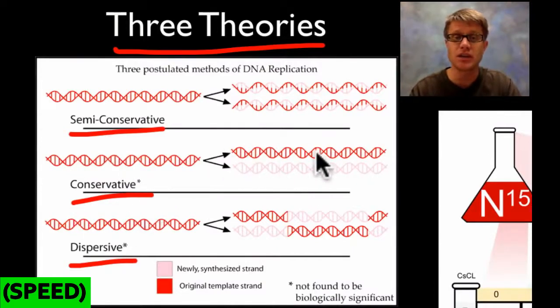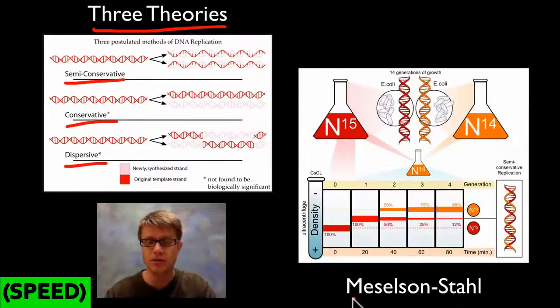But there are other scientists who believe in a conservative theory, that that first DNA remains intact and it kind of makes a photocopy of itself. And then some believe that there was kind of a combination of conservative and semi-conservative, that chunks of it were being split between the two. And this had to do with the histone proteins and how the DNA wrapped around it.